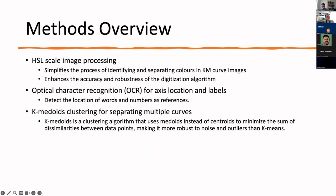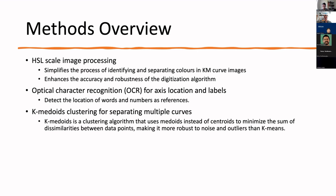Here are some highlighted points of our algorithm's methods. We use HSL image processing — hue, saturation, and lightness — which simplifies identifying and separating colors in KM curve images and helps enhance the accuracy and robustness of the digitization algorithm. We also employ optical character recognition (OCR) for axis location and labels, helping detect the location of words and numbers as references. We use K-medoid clustering for separating multiple curves, which is more robust to noise and outliers than K-means.